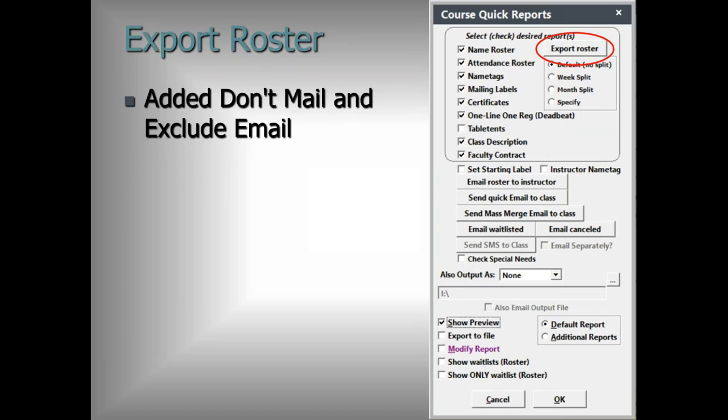The export roster routine now includes 'Don't Mail' and 'Exclude Email' fields, which is definitely handy — especially if you're importing that list into Constant Contact, you don't want to be emailing people who have asked not to be contacted. If you're setting up an external mailing list with a print house, the 'Don't Mail' field is also important. Note that it exports those fields but does not filter those records out automatically — you'll need to filter manually or ensure your import destination handles it.